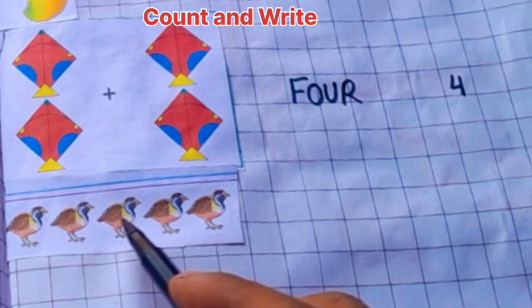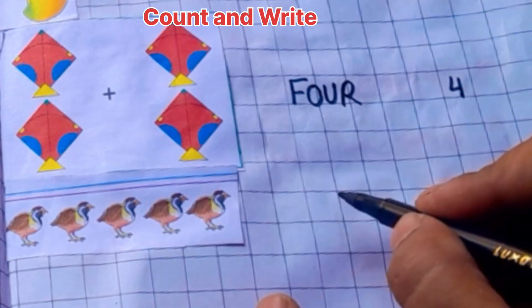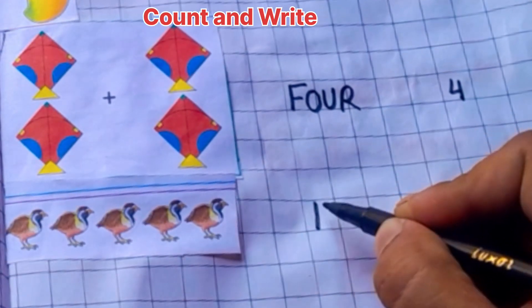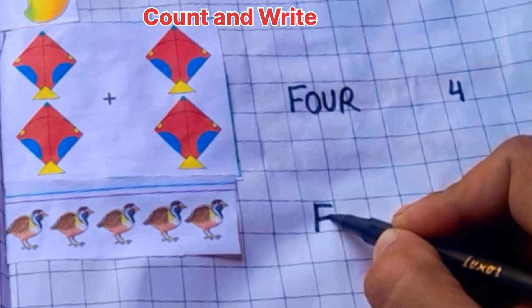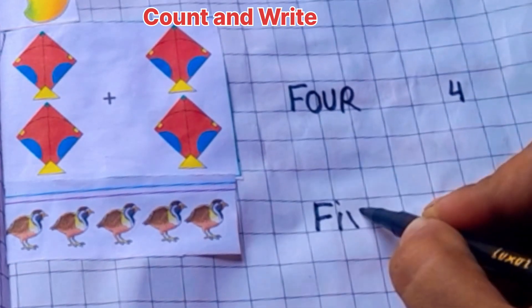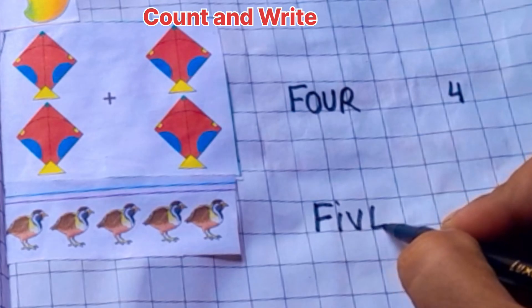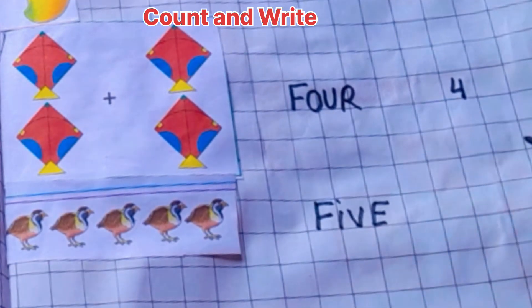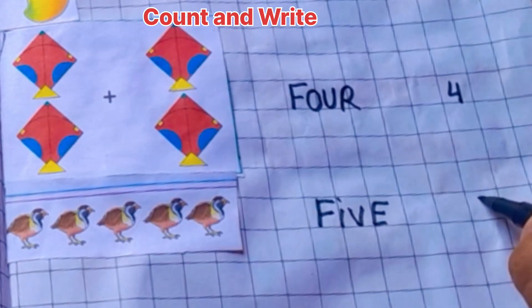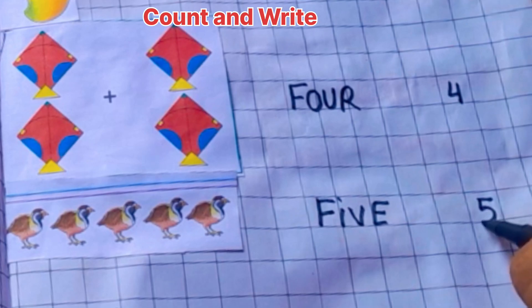One, two, three, four, five. F, I, V, E. Five. Five birds.